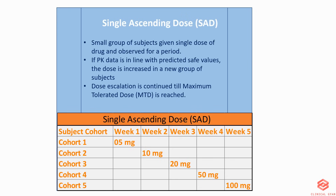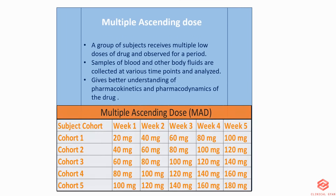The maximum tolerated dose is the highest dose that will produce the desired therapeutic effect with acceptable side effects. In Multiple Ascending Dose studies, a group of subjects receive multiple low doses of the drug. Samples of blood and other body fluids are collected at various time points and analyzed, giving a better understanding of the pharmacokinetics and pharmacodynamics of the drug. As you can see here, subject cohorts receive multiple doses at different time points — cohort 1 receives 20 milligrams in week 1, 40 milligrams in week 2, followed by 60, 80, 100, and so on.